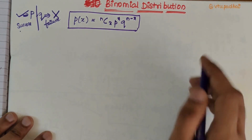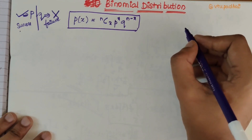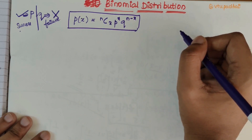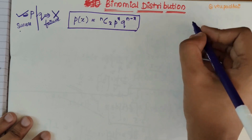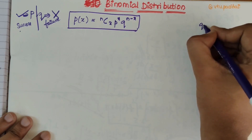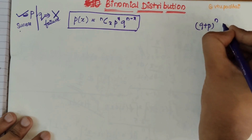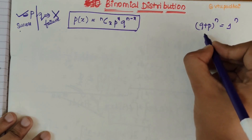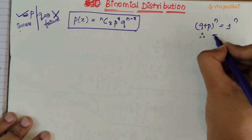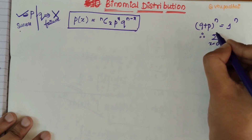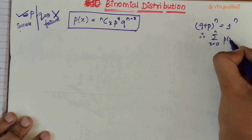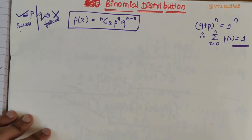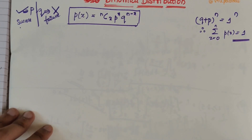It may be observed that the values of P(X) for all X are the successive terms in the binomial expansion. So Q plus P to the power N gives 1 to the power N. Therefore, summation of P(X) from X=0 to N is always equal to 1, and hence the binomial distribution function is a valid probability function.